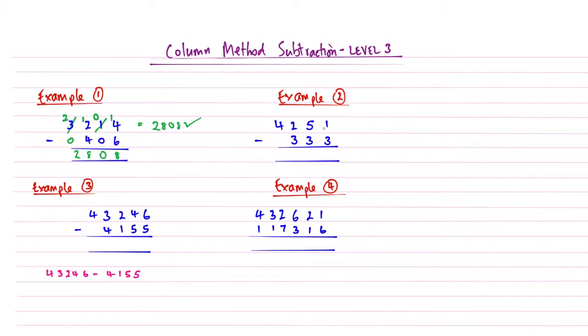Right, so example number 2. First column: 1 subtract 3. Well, again, it's smaller. So let's borrow. So we can borrow from this 5. That's going to reduce to a 4. So the 1 is going to live next to this 1 now. 11 subtract 3. Well, that's going to give me an answer of—well, 3 to add on to 10 is going to be 7. So then we're just going to have another answer of 8 there.